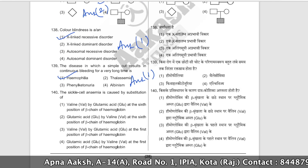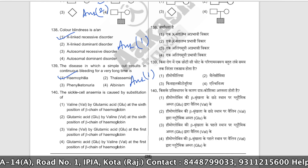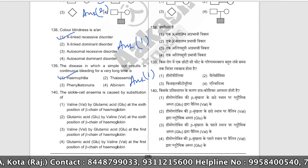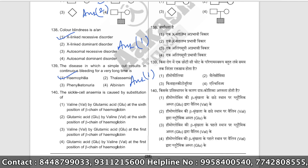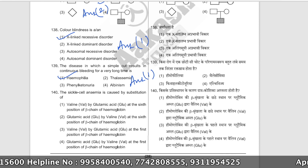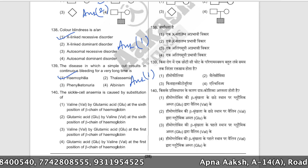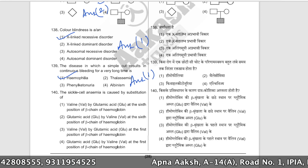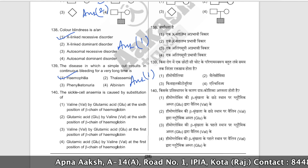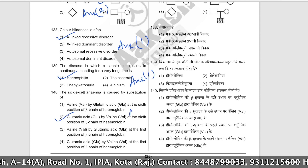Sickle cell anemia is caused by the substitution of glutamic acid by valine at the 6th position of the beta chain of hemoglobin. This single amino acid change results in the sickling of red blood cells and causes sickle cell anemia.